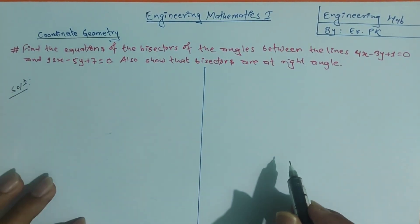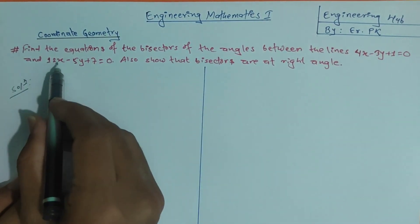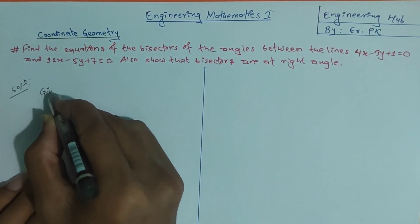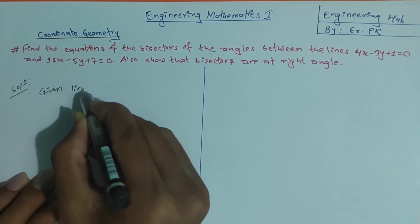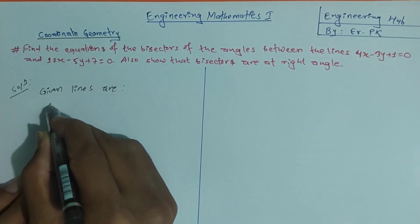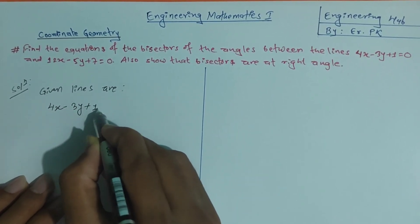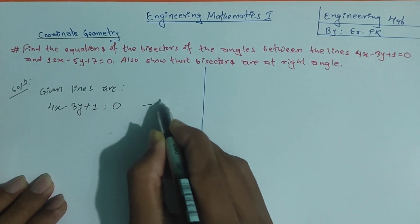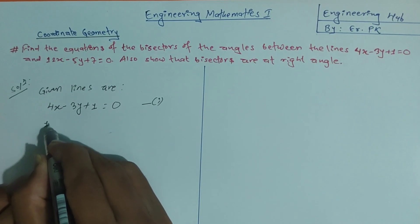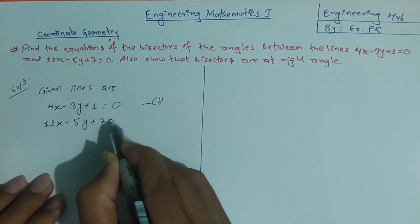The solution is the same. Given line is the same: 4x minus 3y plus 1 is equal to 0, and 12x minus 5y plus 7 is equal to 0. Given line is the same. The solution is equal to the right angle. We will have two bisectors at right angle, and the solution shows 3y plus 1 is equal to 0.